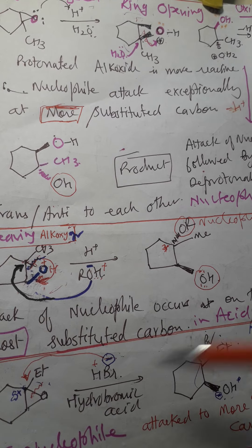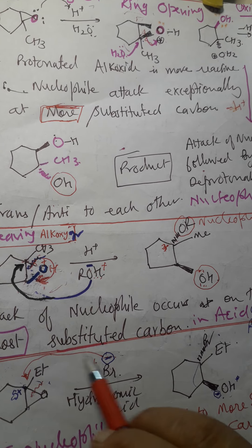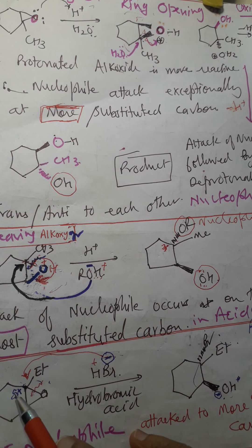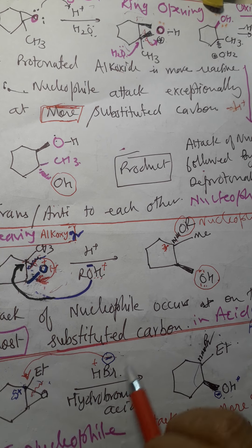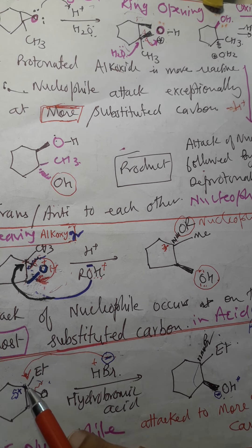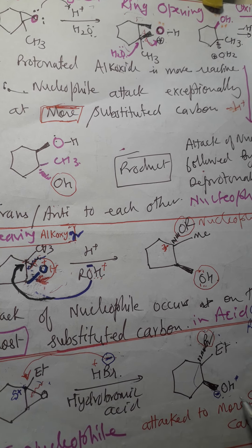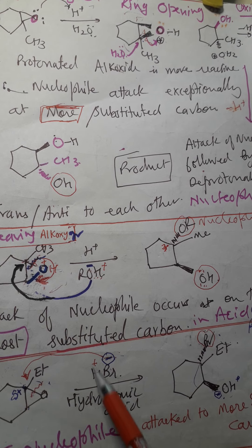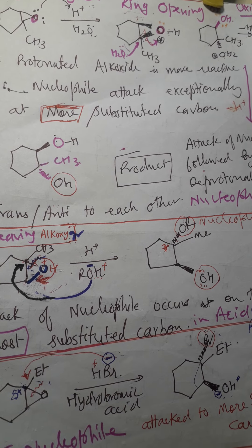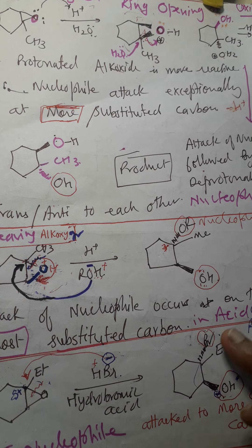Br⁻ attacks the highly substituted carbon because it carries a little delta positive charge — oxygen has left the other carbon. Br joins that carbon, and then OH is obtained after H⁺ is added to the oxygen. So Br and the OH (nucleophile and leaving group) are trans to each other.